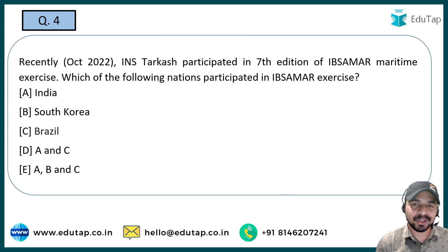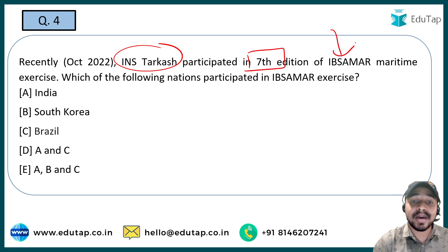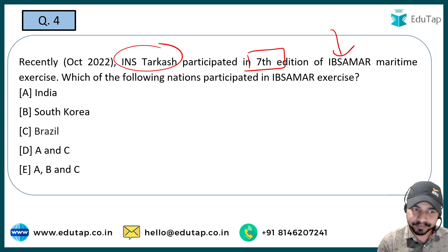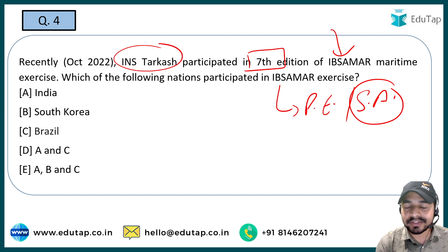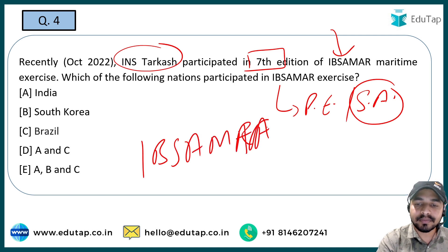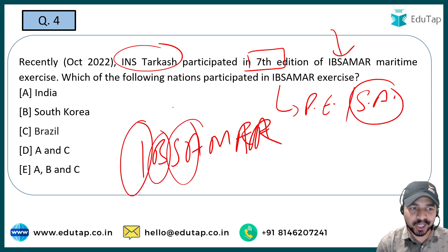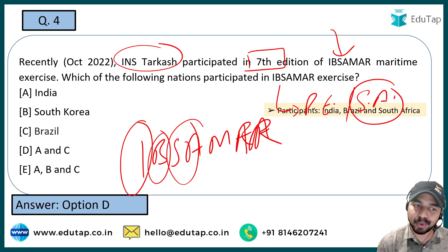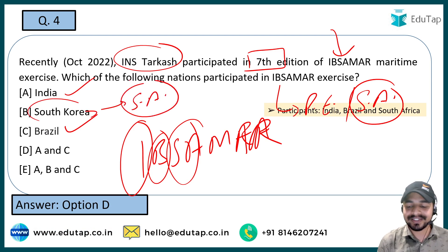The next question: INS Taarkash participated in the 7th edition of IBSAMAR Maritime Exercise. You have to tell which countries participate in this exercise. IBSAMAR exercise was held in Port Elizabeth in South Africa. It is easy to remember: I stands for India, B stands for Brazil, SA stands for South Africa. The right answer is Option D — both A and C, because it is India and Brazil, but South Korea's place is South Africa.